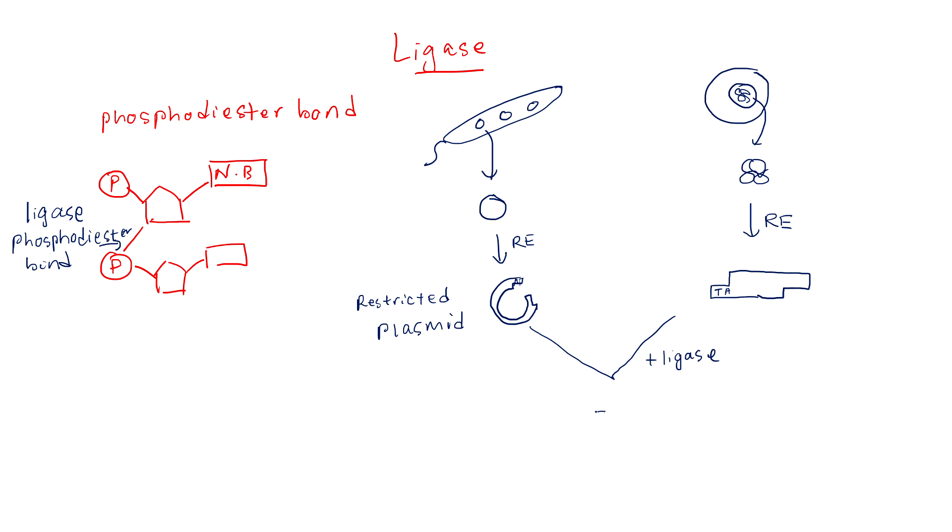They form a recombinant plasmid. Make sure your DNA is double-stranded because the plasmid is also double-stranded DNA. This is the product of ligation. The recombinant plasmid can then be transferred into host cells, into bacterial cells. This is the function of ligase enzyme.